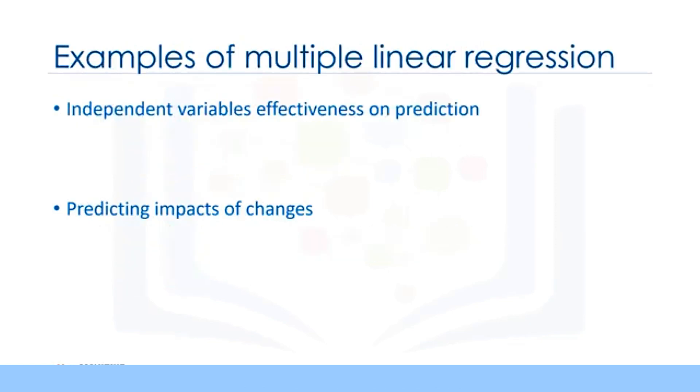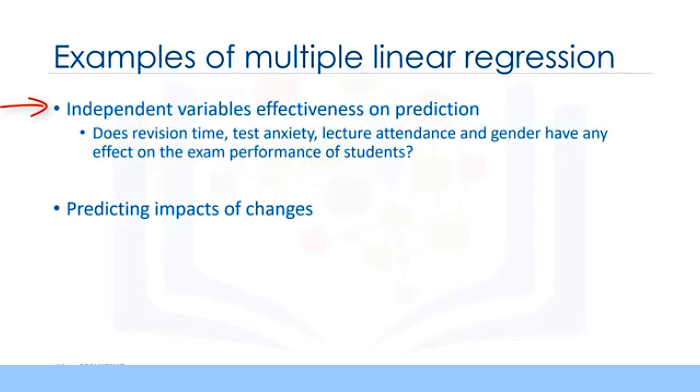Before we dive into a sample dataset and see how multiple linear regression works, I want to tell you what kind of problems it can solve, when we should use it, and specifically what kind of questions we can answer using it. Basically, there are two applications for multiple linear regression. First, it can be used when we would like to identify the strength of the effect that the independent variables have on a dependent variable. For example, does revision time, test anxiety, lecture attendance, and gender have any effect on exam performance of students?